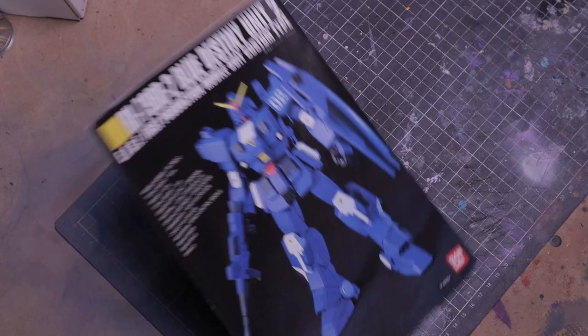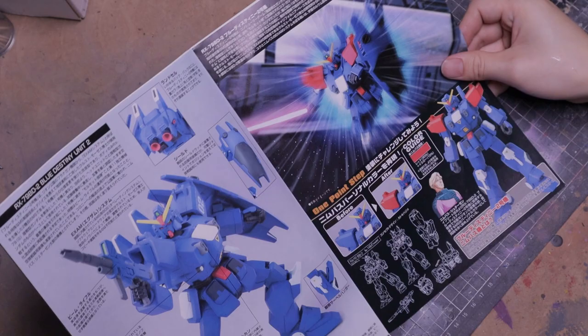So let's jump right into the Gunpla kit. The instruction booklet that comes with the kit is pretty extensive. On one side it gives a preview of the assembled kit, color guides, specs and lore of the Gundam, but I can't read Japanese so it goes past my head. And on the other side are the actual instructions on assembling the kit.